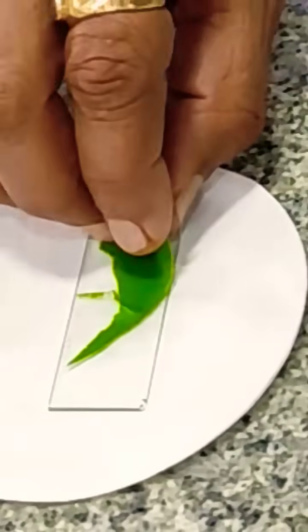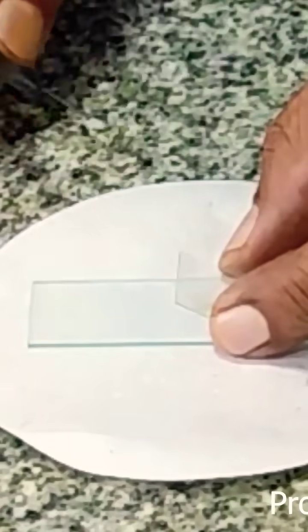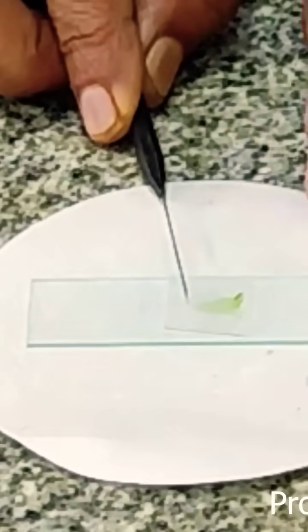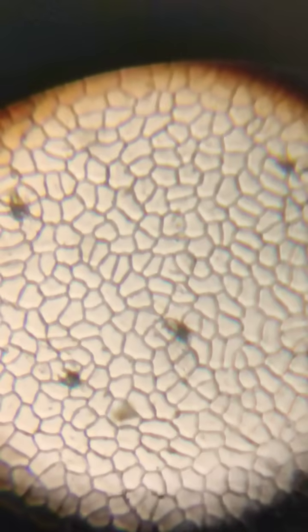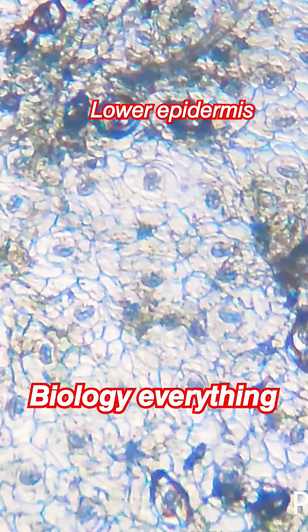Here we got the upper epidermis as well. On the lower side we put the needle, slowly you have to release. Now, a very important thing is to adjust the microscope. We observe the maximum number of stomata.